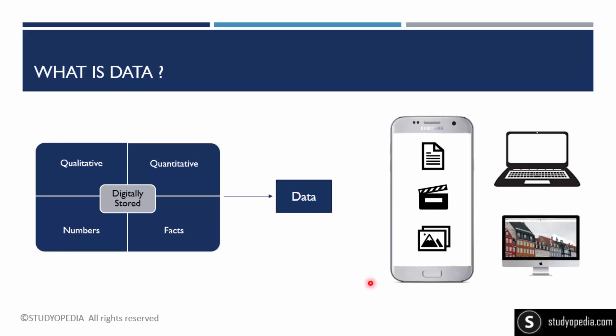For example, you have your mobile phone within that you have text documents, videos, images, your messages on WhatsApp, your messages on phone, all the images, messages, documents, PDF documents, Word documents, Excel on your desktop and laptop. All of these also come under data.